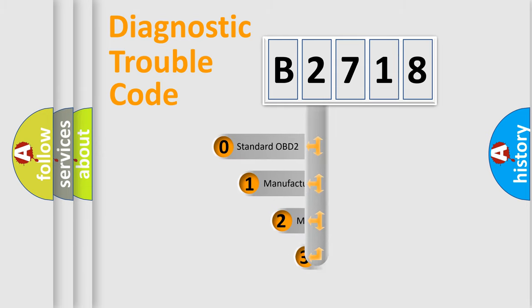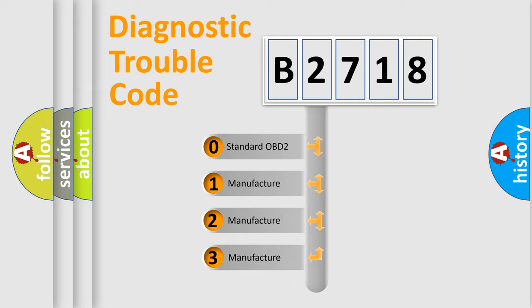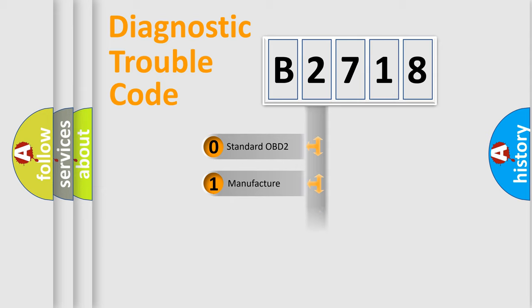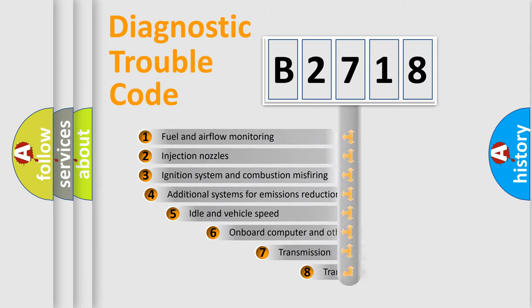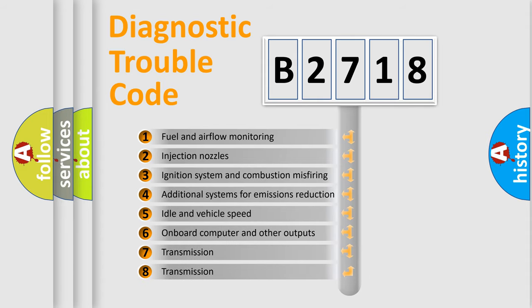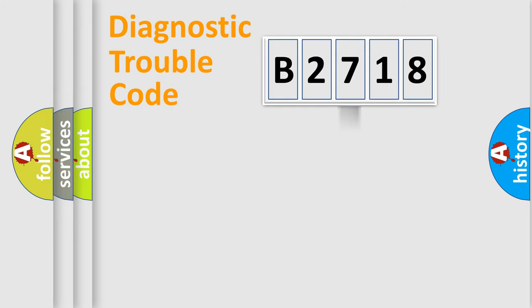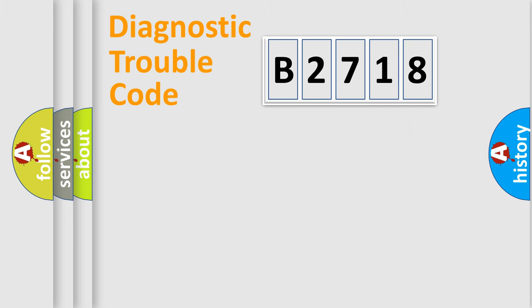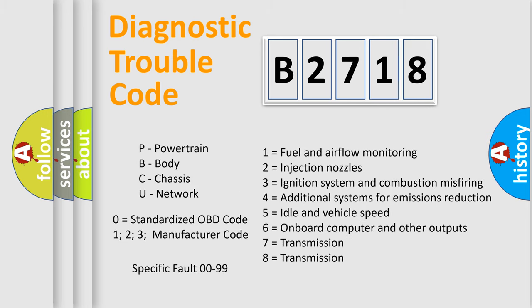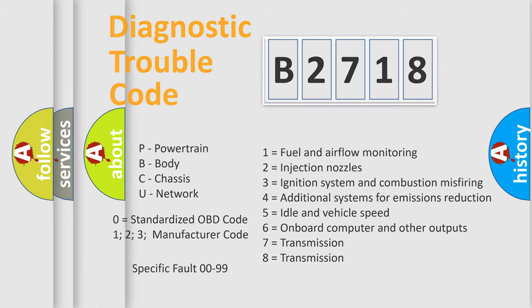This distribution is defined in the first character of the code. If the second character is expressed as zero, it is a standardized error. In the case of numbers 1, 2, or 3, it is a manufacturer-specific error expression. The third character specifies a subset of errors, valid only for the standardized DTC code. Only the last two characters define the specific fault of the group.